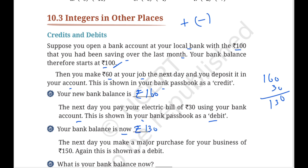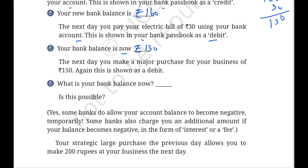The next day, you make a major purchase for your business of rupees 150. Again, this is shown as a debit. So debit item is minus 150. The actual account balance was 130, and 130 minus 150 gives minus 20 rupees. The bigger number carries the minus sign, so the result is minus 20 rupees.